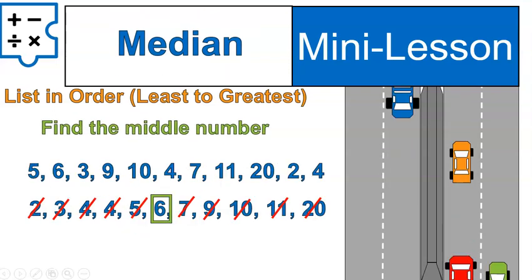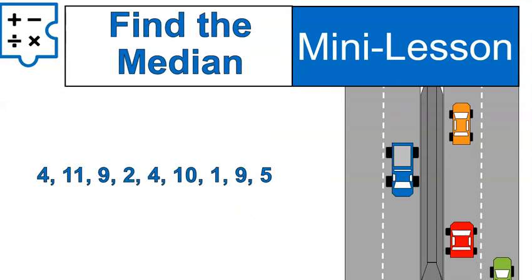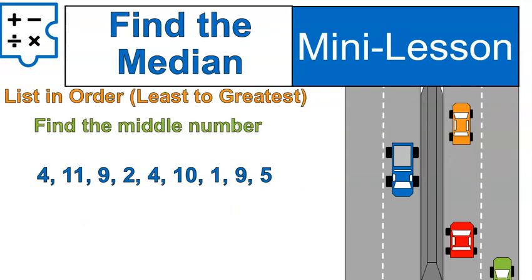Now, I'd like you to find the median of this list of numbers. Remember your steps here. Go ahead and put the numbers in order from least to greatest and calculate or find the middle number. Go.